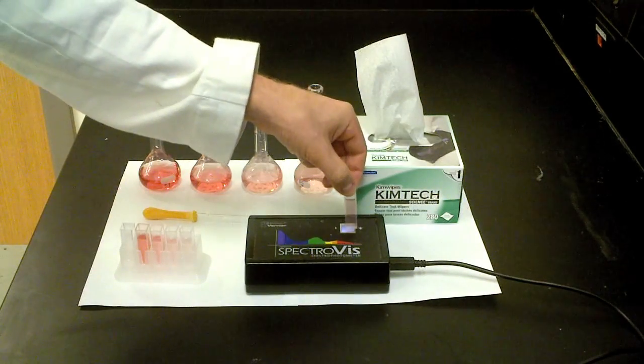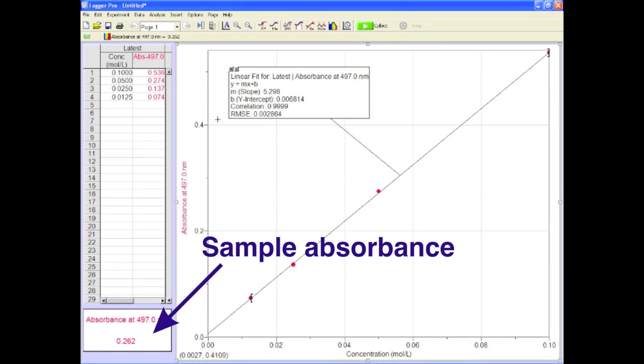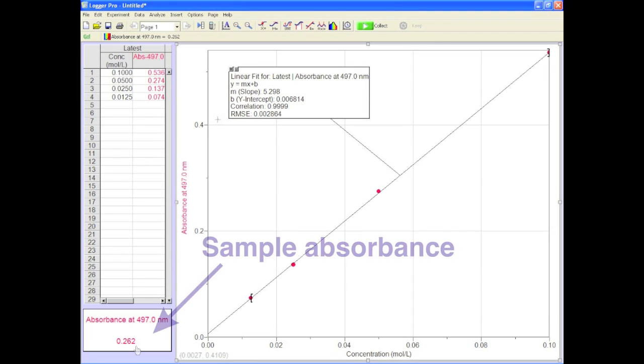Next you need to measure your unknown sample. Stick it in the spec and record the absorbance in your notebook. You don't know its concentration so don't worry about trying to keep it, you just need the absorbance. That's it.